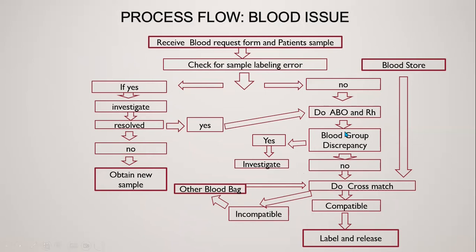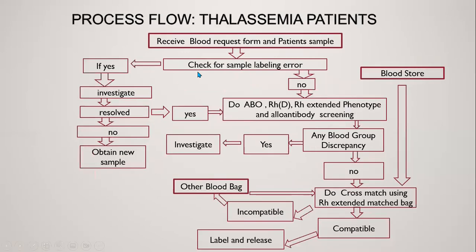If there is a blood group discrepancy due to any allo or auto antibody, it is investigated in detail in the advanced red cell serology section. If there is no blood group discrepancy, then cross-matching is done from the blood stored in release storage. If incompatible, we take another blood for cross-matching. If we have a successful cross-match and blood is compatible, it is labeled and released.